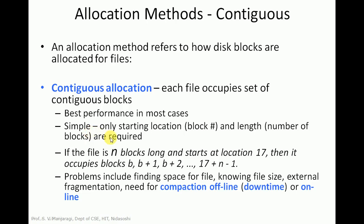Contiguous allocation provides the best performance in most cases and is very simple to implement. We only need to record the starting location of the first block on disk and the length — the number of blocks to allocate to the file. For example, if a file has n blocks and starts at location b, then it occupies contiguous blocks b, b+1, b+2, and so on. So contiguous blocks are allocated to the file in sequence.